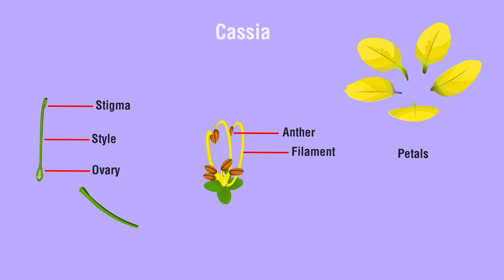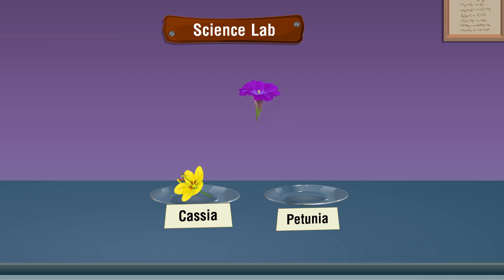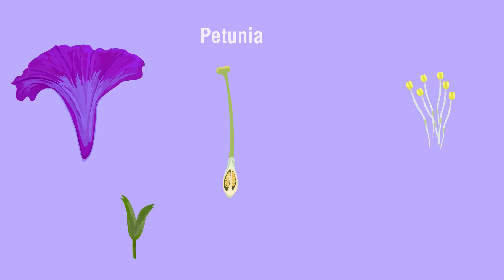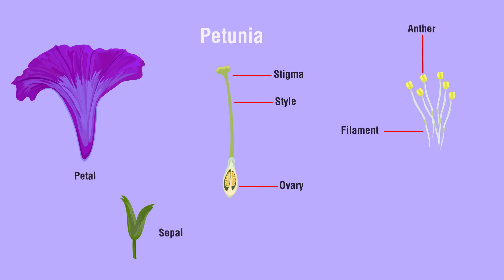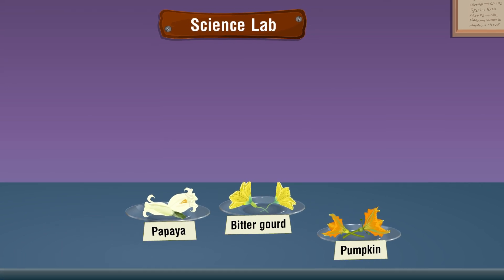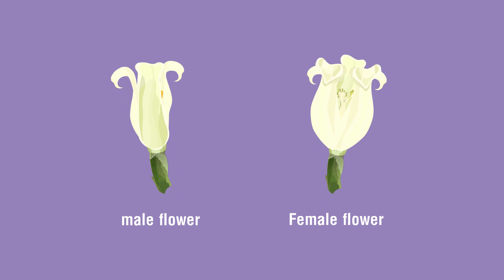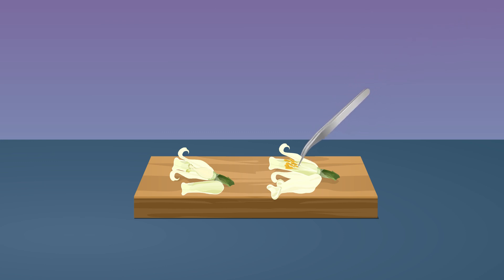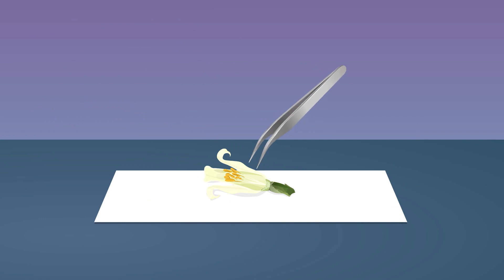The small stalk-like structure supporting a single flower is called a pedicel. Now let's study unisexual flowers: Papaya, Pumpkin, and Bitter Gourd. Take both male and female papaya flowers from the watch glass. Keep the flowers on top of the wooden board. Cut the male and female flowers vertically into two halves using a blade. Place a white sheet of paper over the table and arrange all the floral halves on paper using forceps.